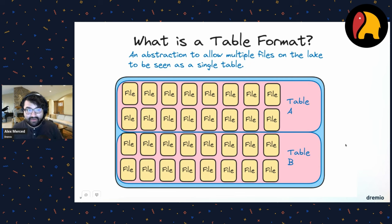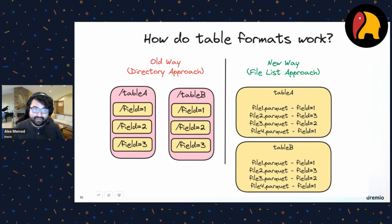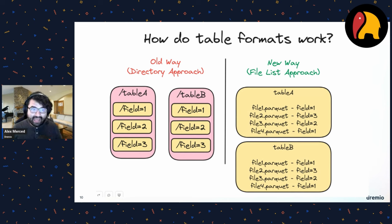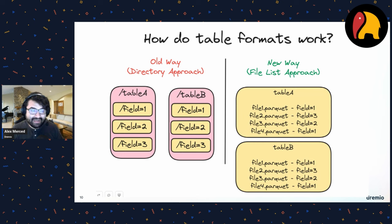The original table format was part of Apache Hive. Hive was created because working with HDFS required writing analytical jobs in Java using MapReduce — not easy. Hive allowed writing SQL that converted to MapReduce. To support SQL, the concept of a table was needed, so the Hive table format was created. Its approach: any files in a folder called 'table_a' are table A — it was folder-based.